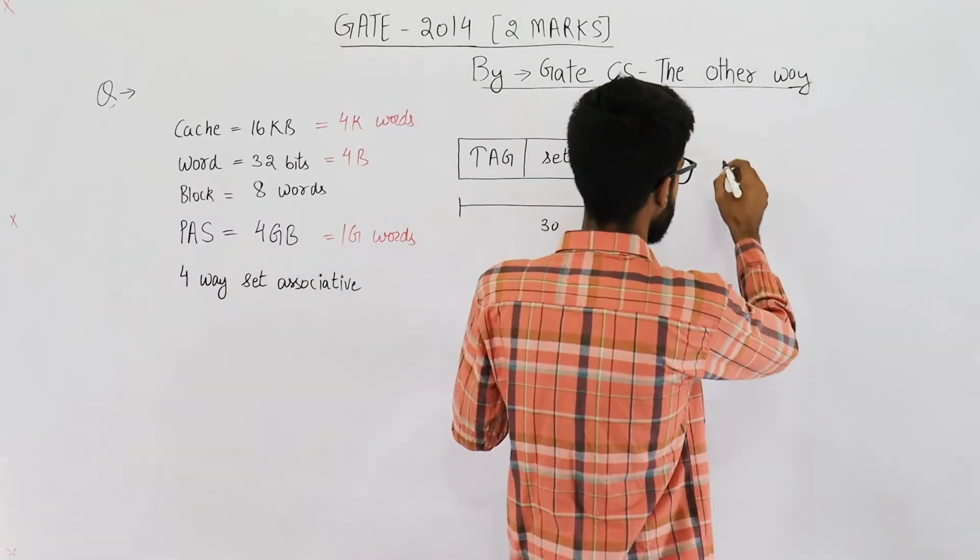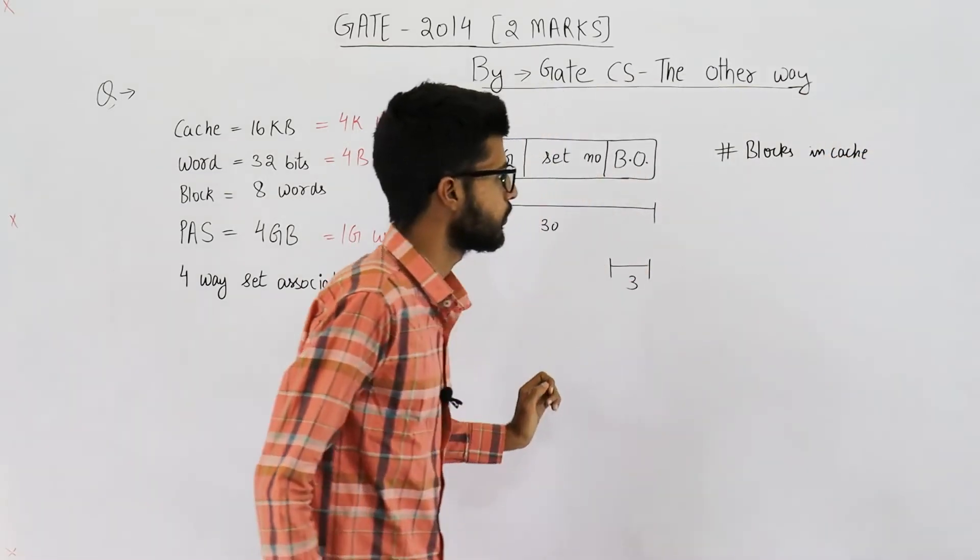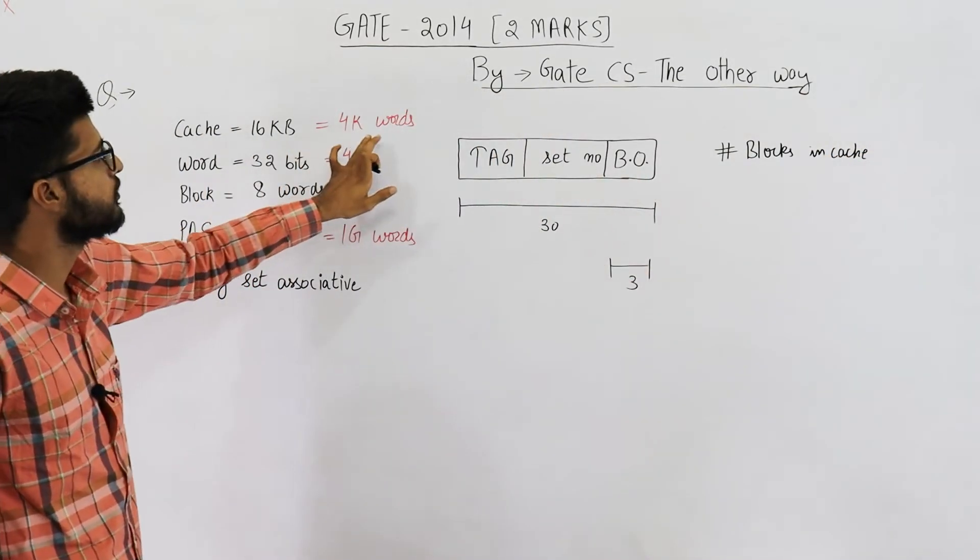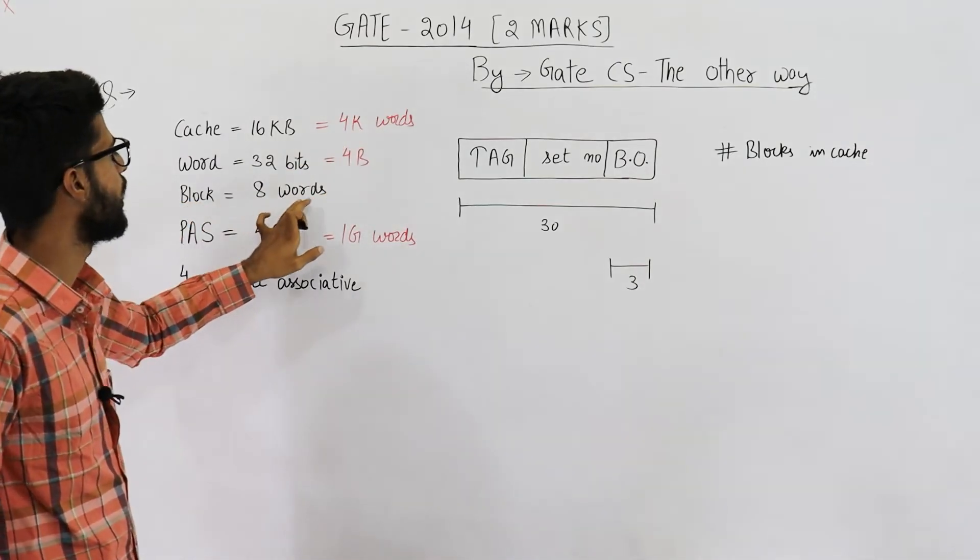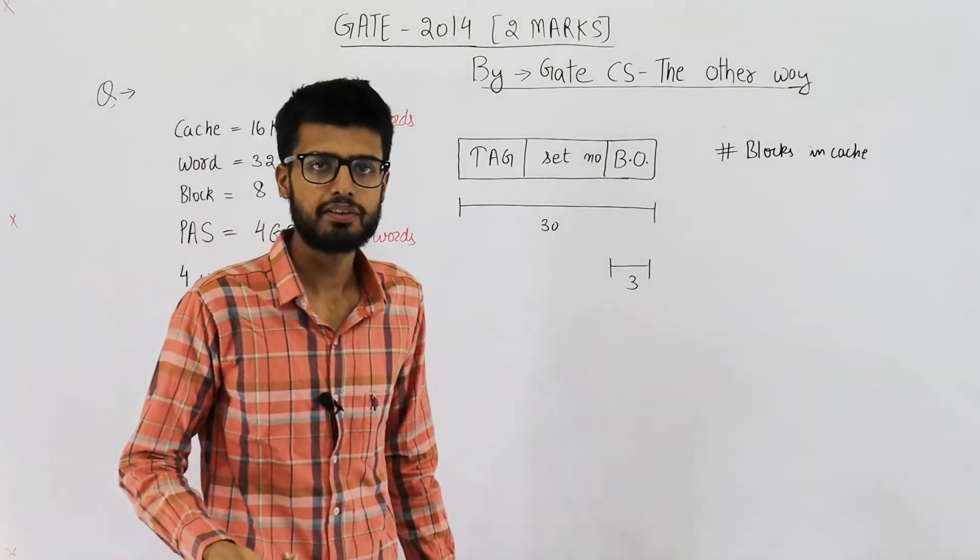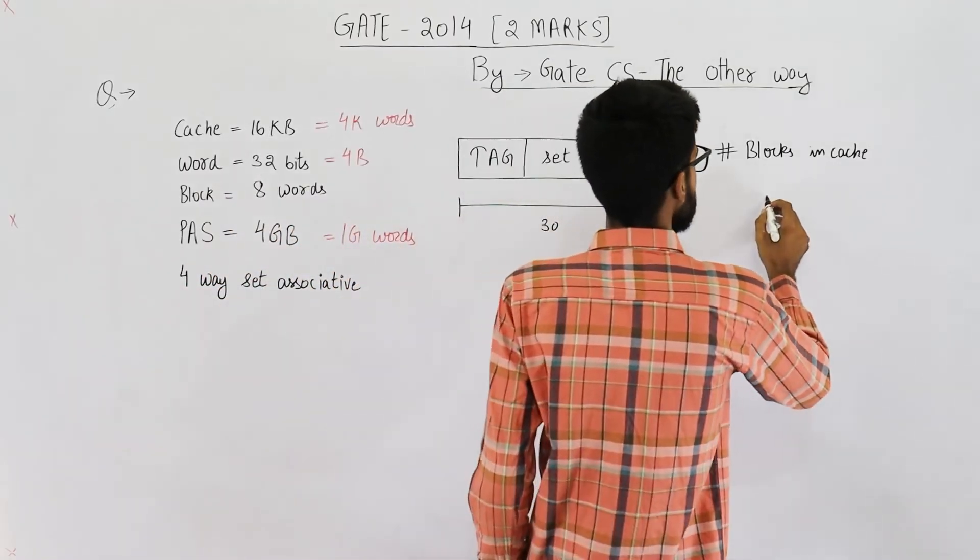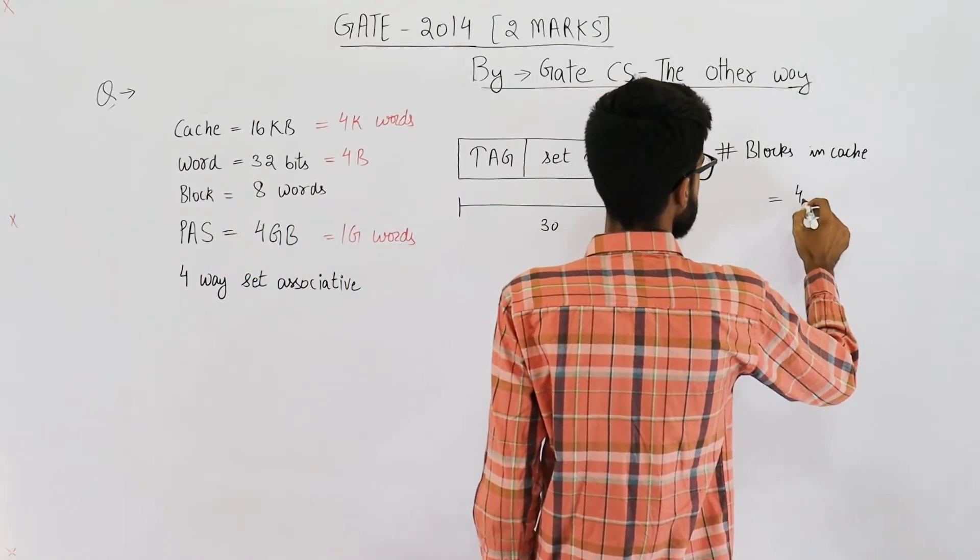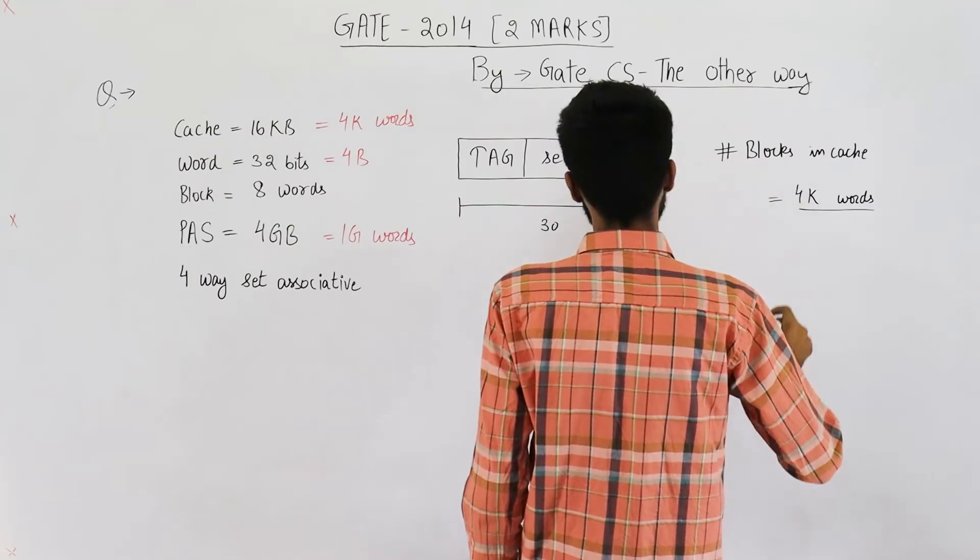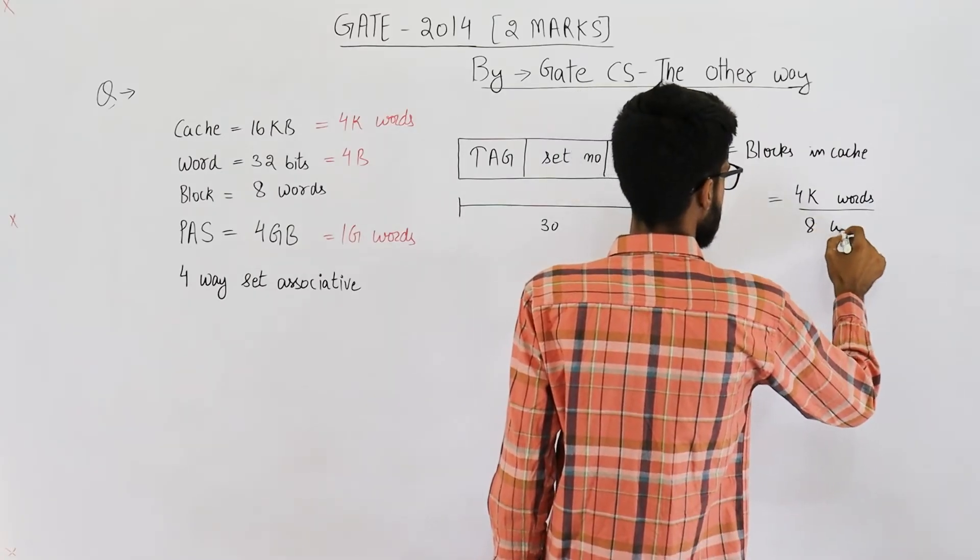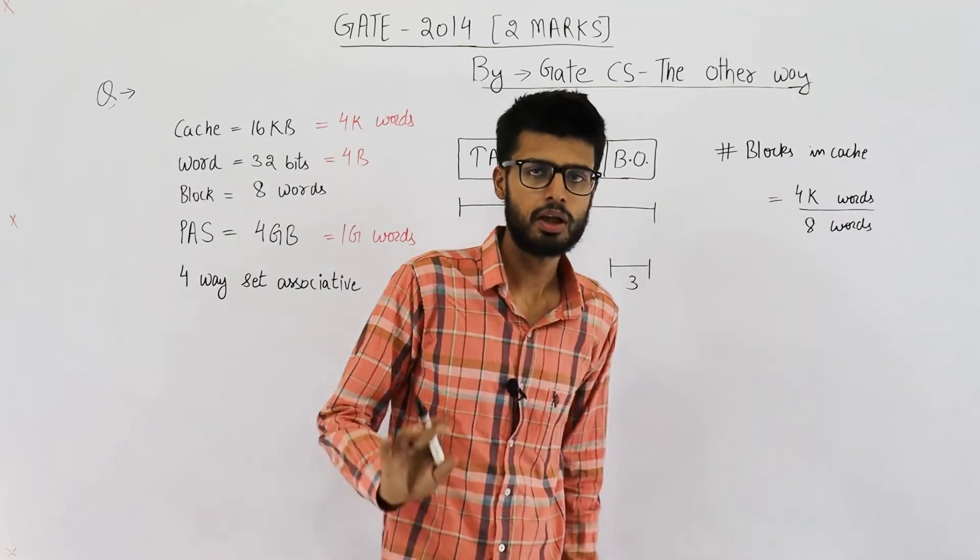So number of blocks in cache will be total size of cache divided by size of one block. Total size of cache is 4K words. Size of one block is 8 words that is given in the question. So this is K by 2 in number.